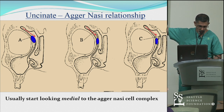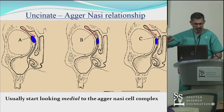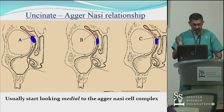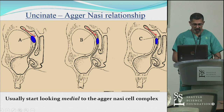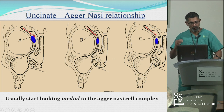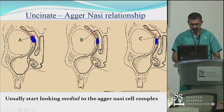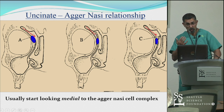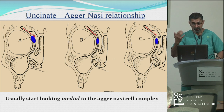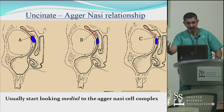Why does all this matter? In the A configuration, when the uncinate process is terminating on the orbit as the medial hemisphere of the agar-nazi cell, the frontal will drain directly into the middle meatus and the ostium will appear or feel medial in the meatus. In those other two configurations, the outflow tract of the frontal does not drain into the middle meatus but drains into the infundibulum — and where it drains is going to seem somewhat more posterior in addition to medial, because it has to drain from behind the agar-nazi cell.